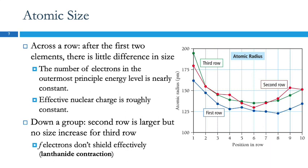Looking at properties of transition elements: when we look at atomic size going across a row, normally atoms get smaller as you go to the right. For the transition metals, the first two elements get smaller, but after that they're kind of all the same — there's not a real trend. The reason is that the number of electrons in the outermost principal energy level is nearly constant — mostly 2, occasionally 1 — so the effective nuclear charge is roughly constant, because the d electrons being added are core electrons and don't affect the nuclear charge significantly.